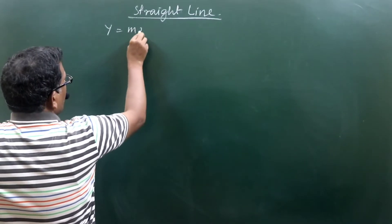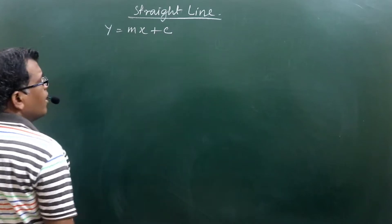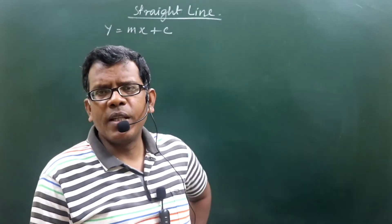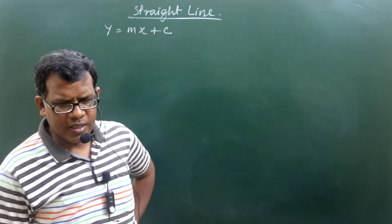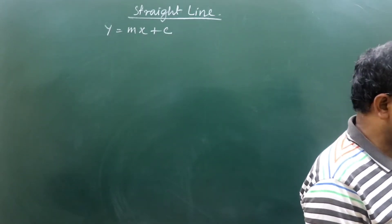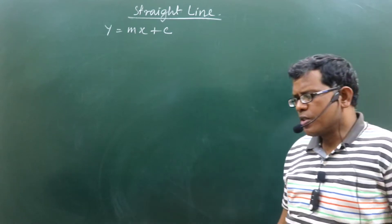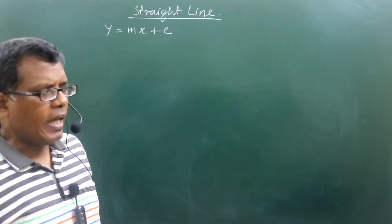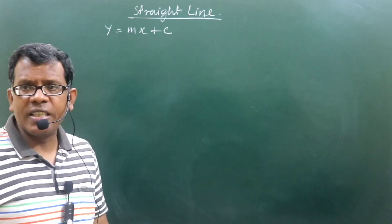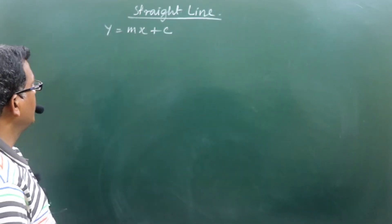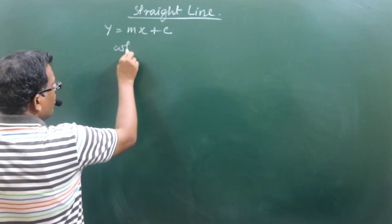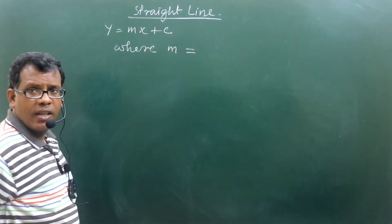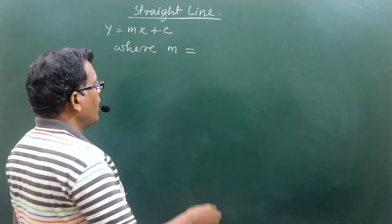y is equal to mx plus c — what is the name of this form of straight line equation? How do we name this particular form? Can you tell me what m stands for and what c stands for? m is known as the slope of the line.